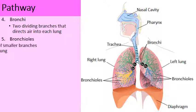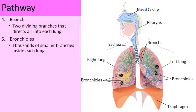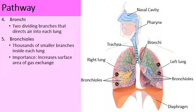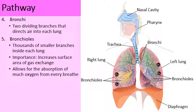The bronchi then subdivide into thousands and thousands of smaller branches scattered throughout your lungs. These smaller branches are called the bronchioles. As oxygen moves through the bronchioles, this increases the amount of surface area for gas exchange, allowing for the most absorption of oxygen with every single breath.